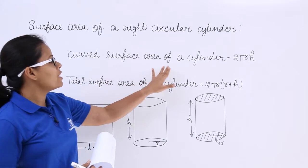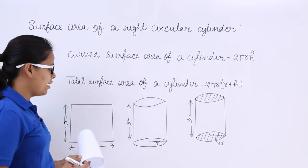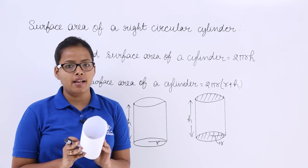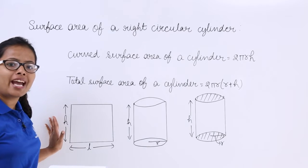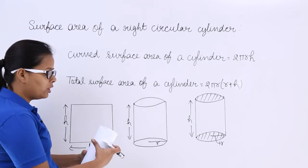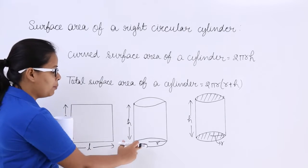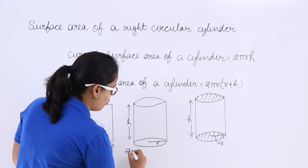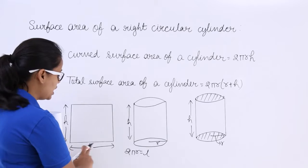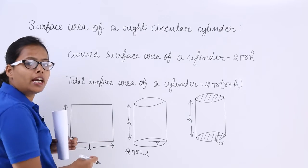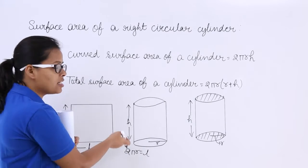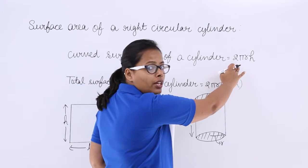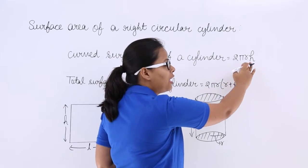So let's see the curved surface area of a cylinder. You can see here, this paper when unfolded was in the shape of a rectangle, and a rectangle has the area of H into L. When you roll this into a cylinder, L becomes equal to the perimeter of the cylinder. You can write this as 2πR = L, because this part has been rolled into a cylinder, and H is the height of this paper. So this is making a cylinder with area L into H, which is 2πR into H.